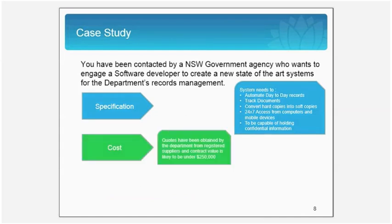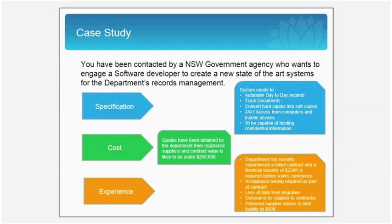Costs: they have obtained quotes and the contract value is likely to be under the $250,000 mark, but the department's past experience has made them cautious. They've lost data in the past from data migration, the suppliers want to employ contractors, and amongst other things, their preferred supplier wishes to limit their liability only to $50,000 for an over $150,000 contract. So let's see how we can advise the agency to navigate all this while adhering to the Procure IT framework.